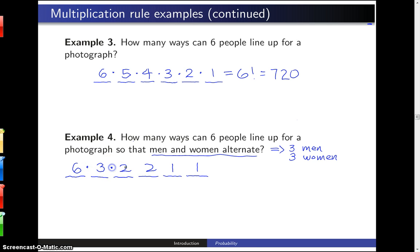And again, what the multiplication rule says is that those different ways of making the decisions need to be multiplied. Six times three is 18, times two is 36, times two is 72 different ways that you can line up six people for a photograph so that men and women alternate.